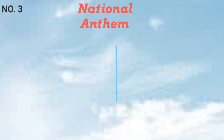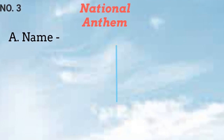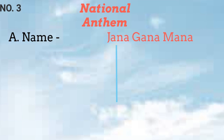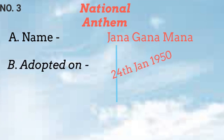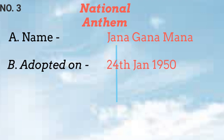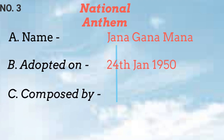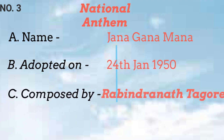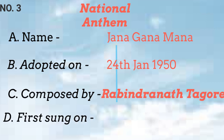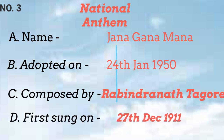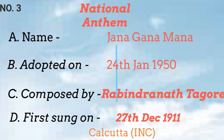Number 3. Let's talk about our national anthem. Our national anthem is Jana Gana Mana. It was adopted on 24th January, 1950. It was composed by Rabindranath Tagore. Our national anthem was first sung on 27th December, 1911, at the Calcutta Session of the Indian National Conference.